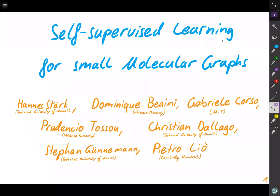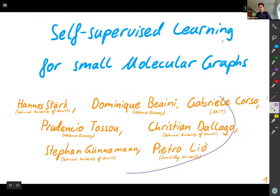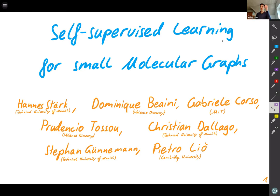Today's presentation covers the final thesis on self-supervised learning strategies for small molecular graphs. To summarize in one sentence: we try to pre-train GNNs with the 3D structure of molecules such that they can then make better predictions for molecules where we don't know the 3D structure.